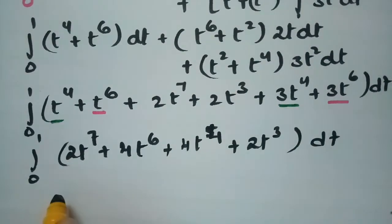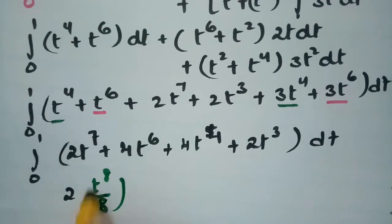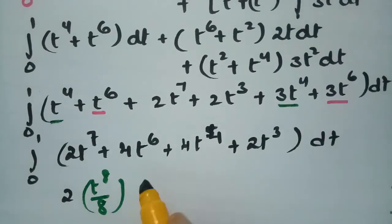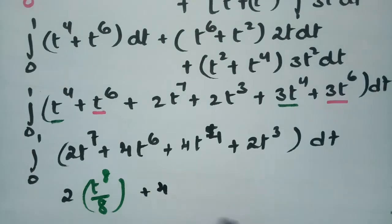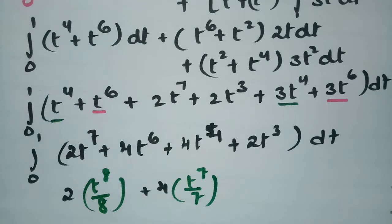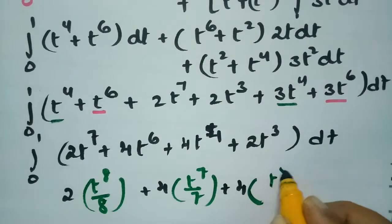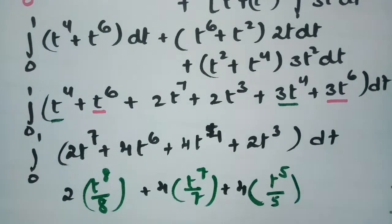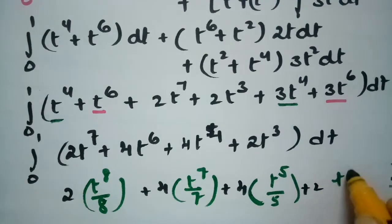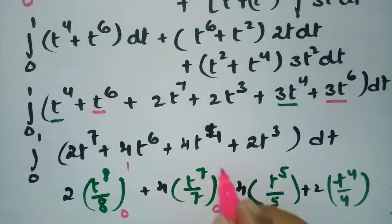Now integrating: 2·(t⁸/8) + 4·(t⁷/7) + 4·(t⁵/5) + 2·(t⁴/4), with limits from 0 to 1.